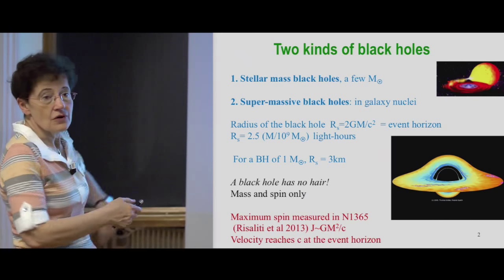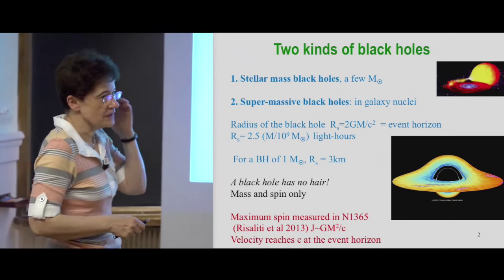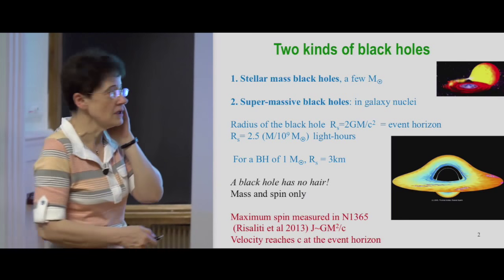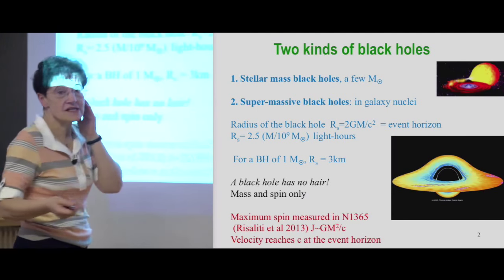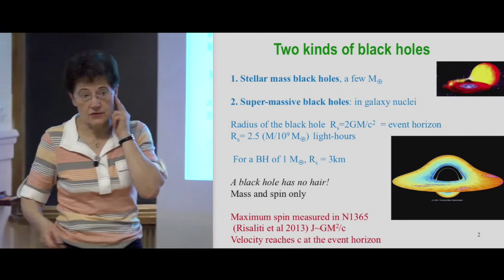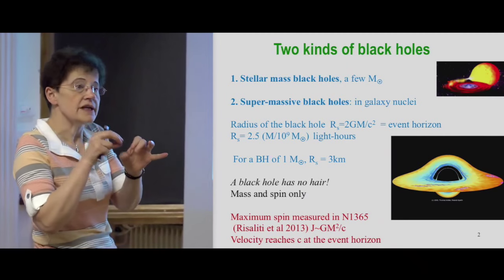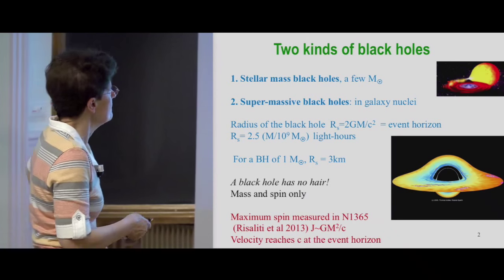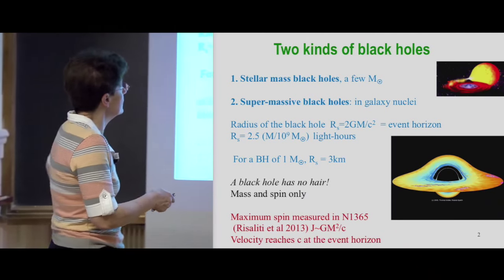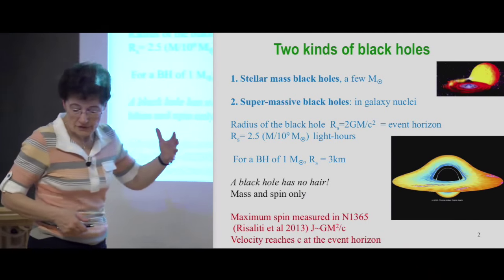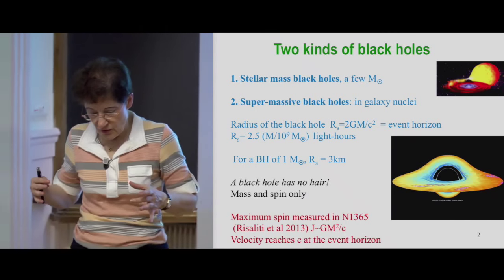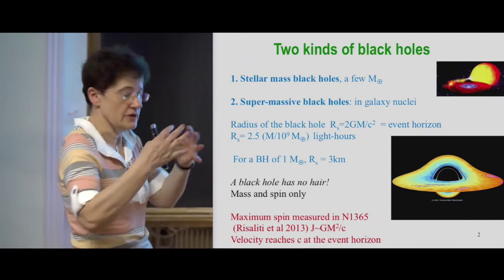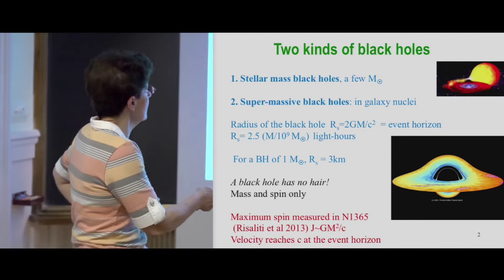There are billions of stellar black holes in galaxies, but today we are interested in the supermassive black hole, which means 10 to the 6 or 10 to the 9 solar mass black holes, which are only in the center of galaxies — one per galaxy in the galactic nuclei. You can compute the order of magnitude of the radius, what we call the event horizon, where there is a point of no return for light, where the escape velocity equals the light velocity.